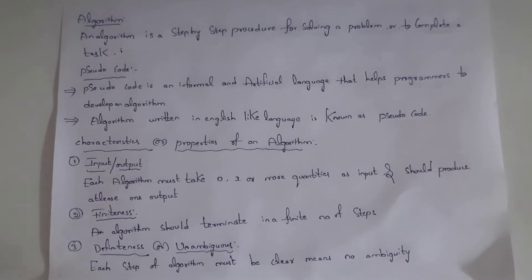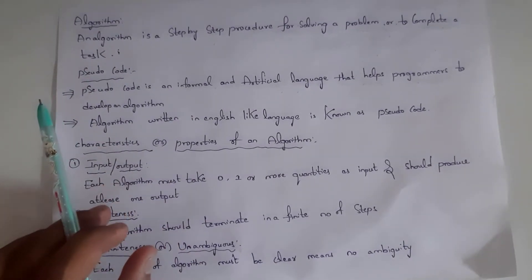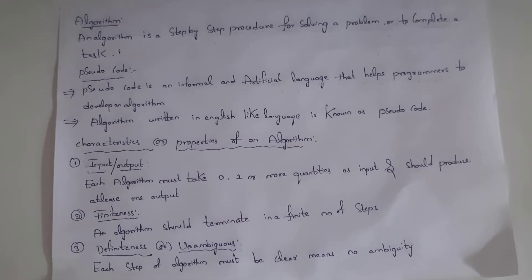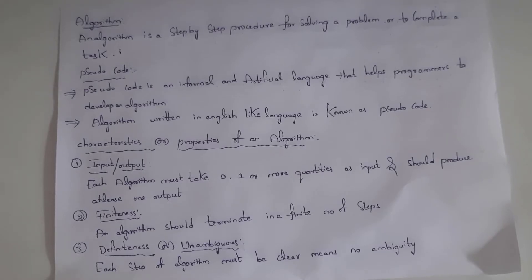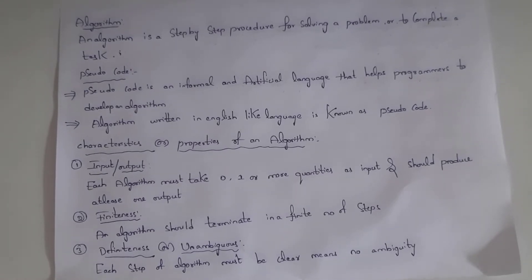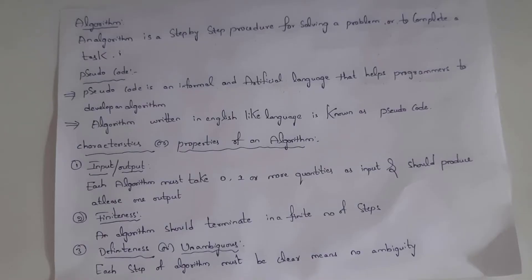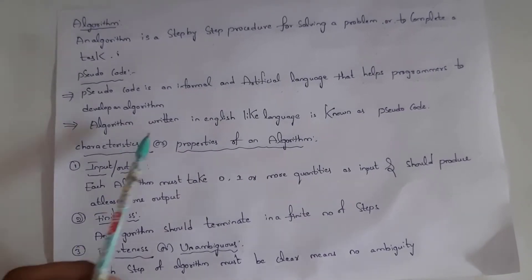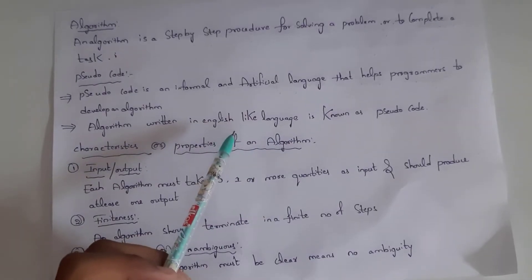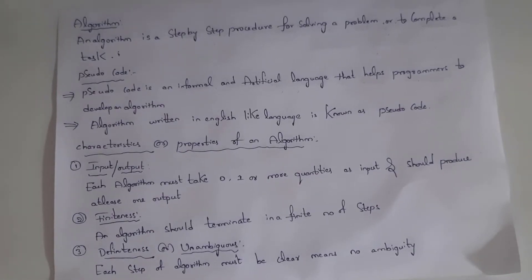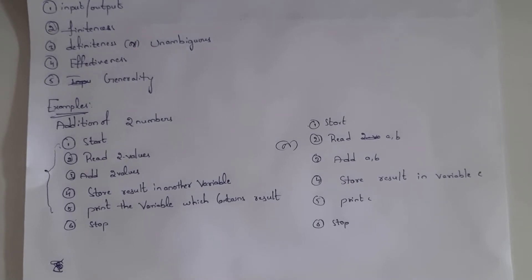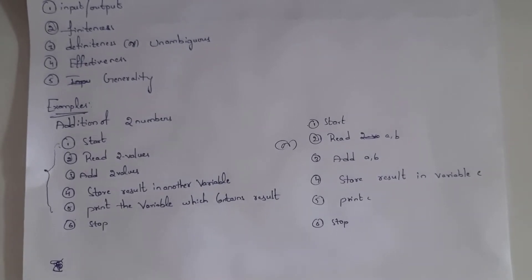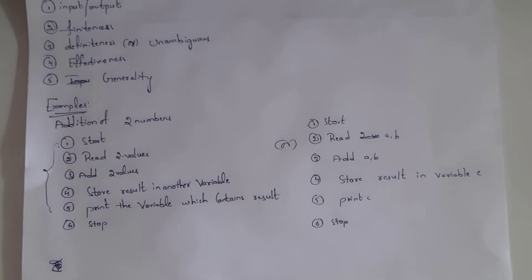Next, you need to know what pseudocode is. Pseudocode is an informal and artificial language that helps programmers develop an algorithm. Informal means user-friendly language; artificial language means a man-made language. An algorithm written in an English-like language is known as pseudocode. There is no strict rule to follow when writing an algorithm — you can write it as you wish.